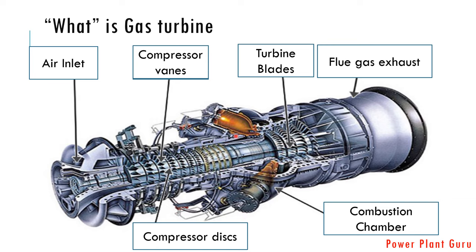There will be a spark plug, so a spark is generated and flames are created. These combustion chambers are arranged in a 360-degree annular type of arrangement and are connected to each other. Once a spark creates a flame and it is established in one chamber, it will pass through all the 10 or 14 combustion chambers — it may be 10, it may be 14, it may be 20 also, based on the capacity of the machine.